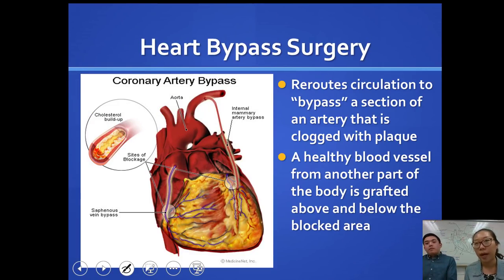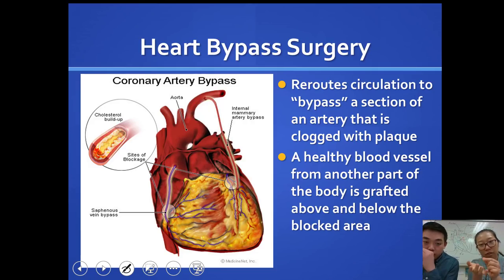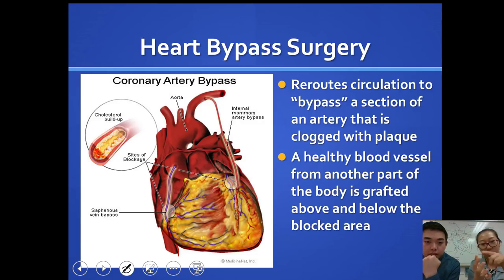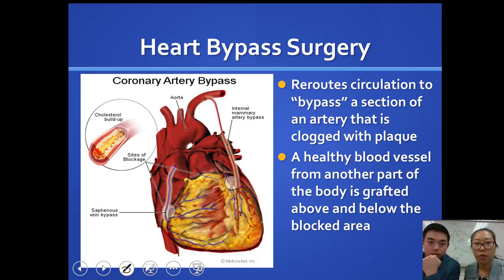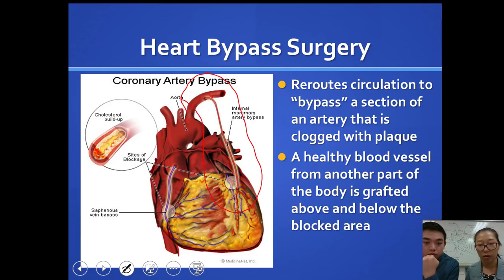Heart bypass surgery means going a different route than the original path. You find the artery clogged with plaque, go right below that blockage, and reroute the blood. A common example is the internal mammary artery bypass for coronary arteries. You take another artery from your own body and place it there through surgery, bypassing the clogged section.